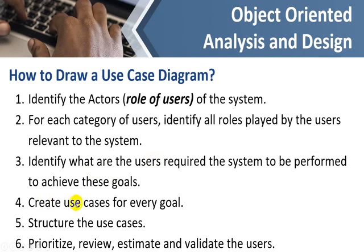Fourth, create use cases for every goal. For example, if I want to withdraw money I should draw a particular use case for withdrawal; if transferring funds, I must have a use case for that. We draw different use cases for different goals. Fifth, once we have all this information, we structure the use cases — put the labels in the diagram. Then from all those use cases we prioritize, review, estimate, and validate that we have drawn the correct use cases, and we discuss these with the user.